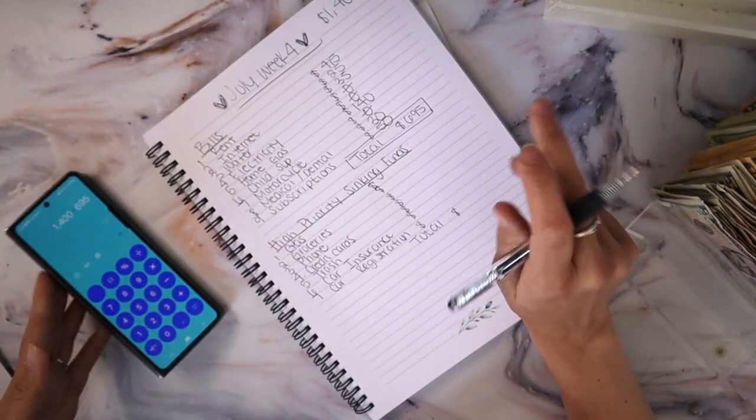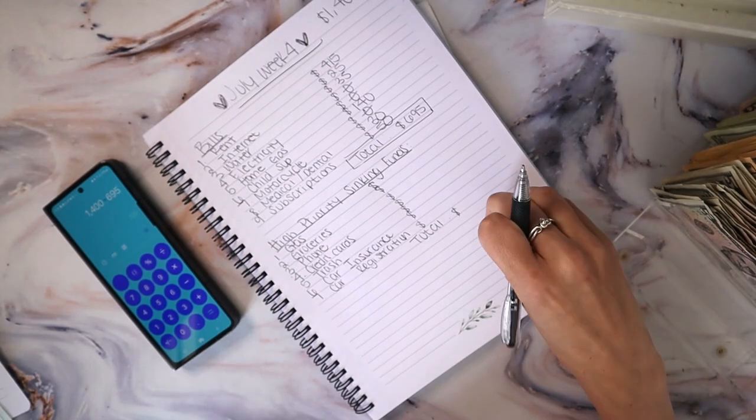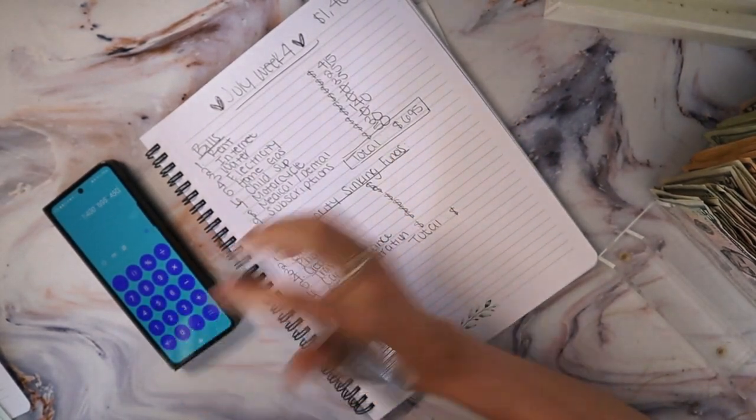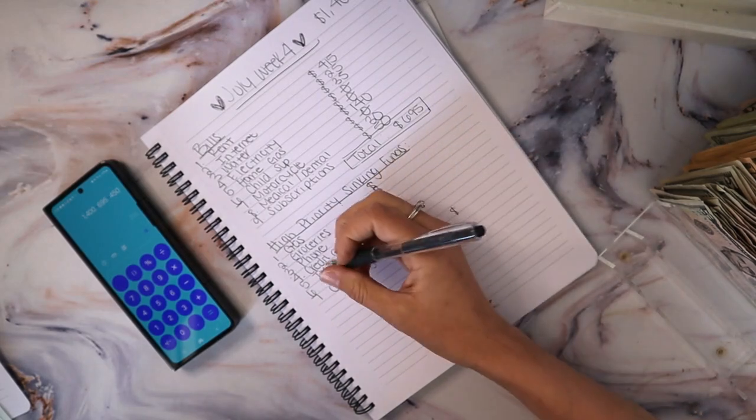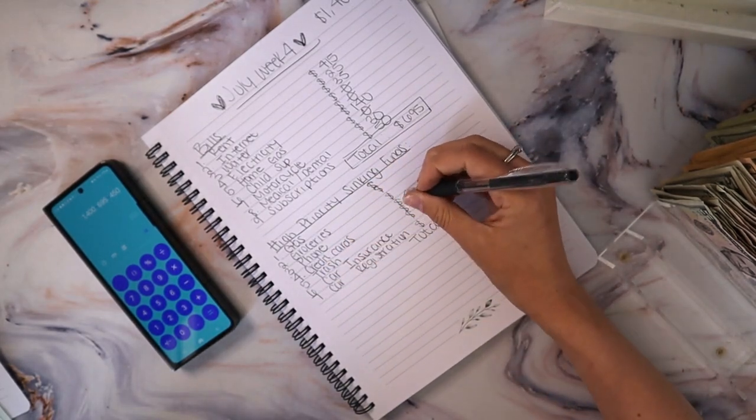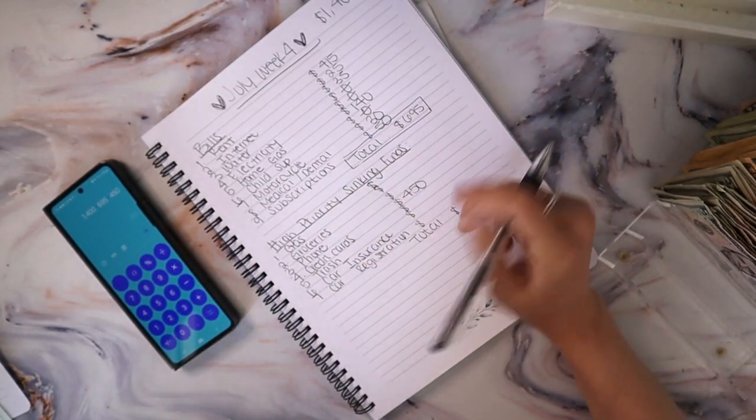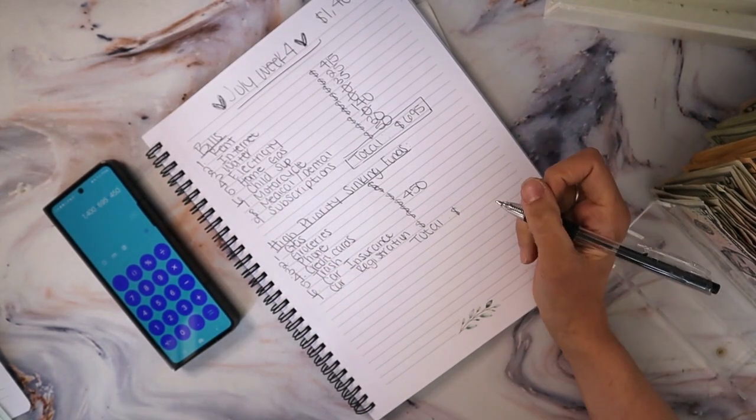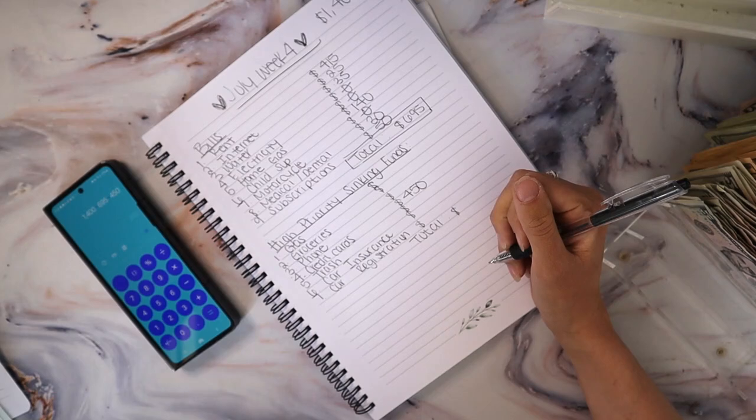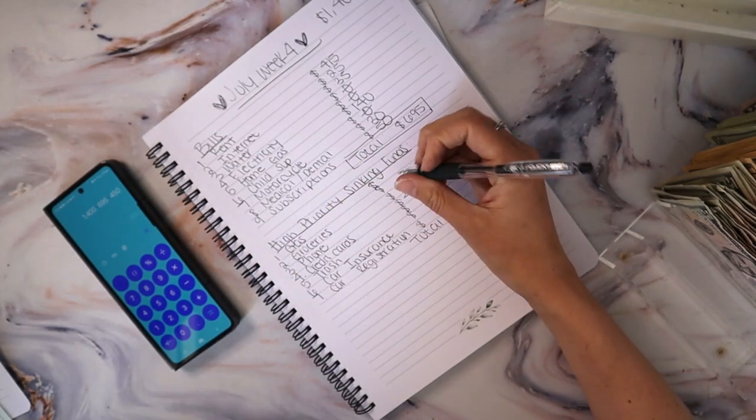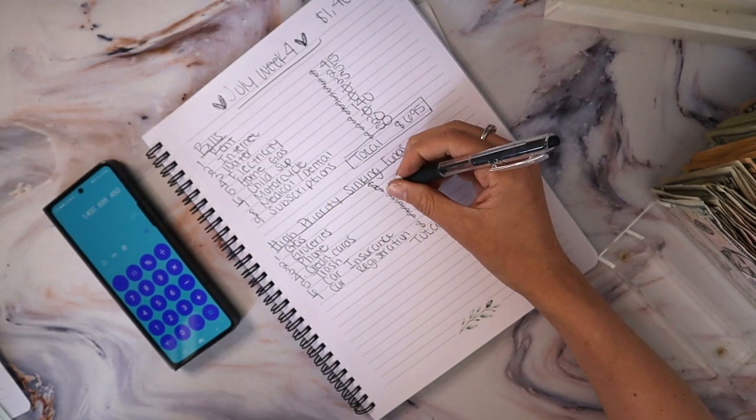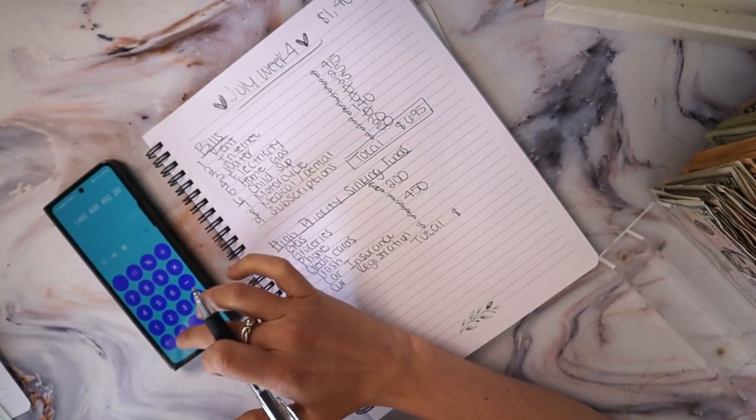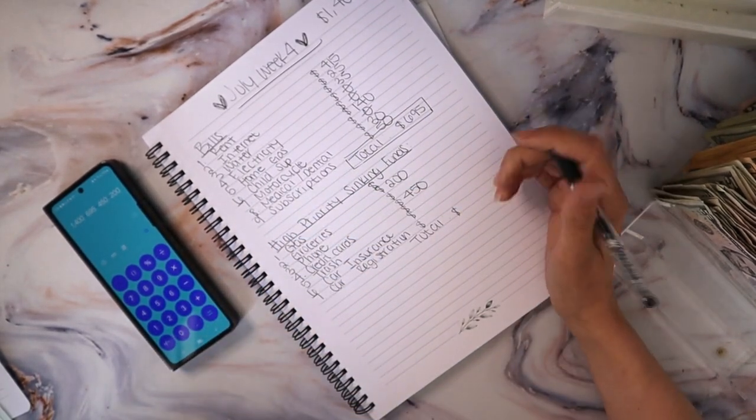So let's stop these priorities. So my number one priority for my high priority sinking funds is my credit cards. So we're going to stuff $450, even though we didn't make very much, $450 towards credit cards. And we're going to call that good. So that leaves me $255. Food is a priority and we are going to stuff $200 towards food and that leaves me with $55.